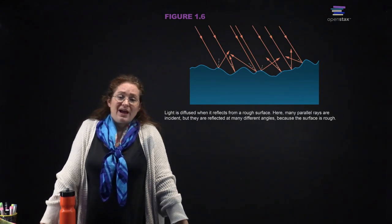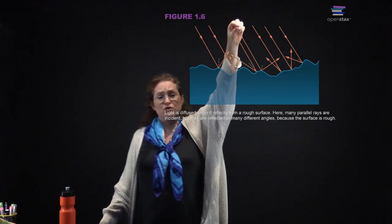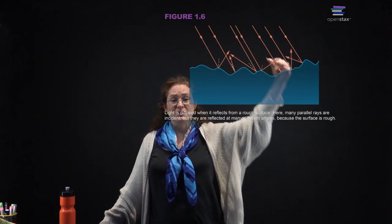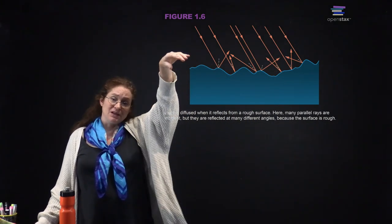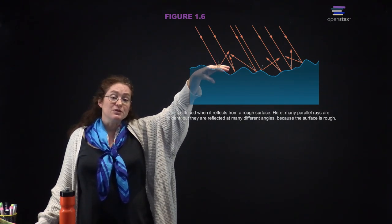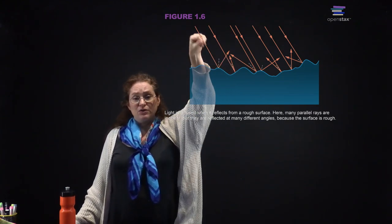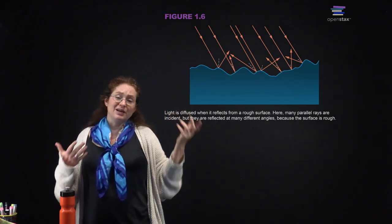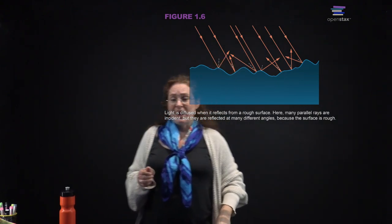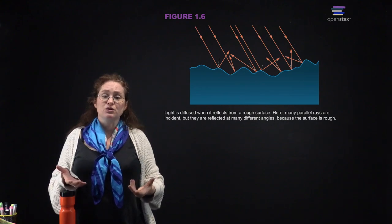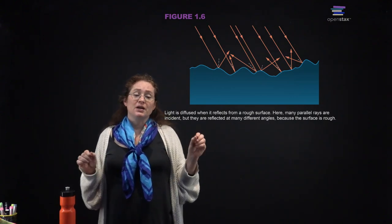When you have a rough surface, you have a bunch of different light rays hitting it. They are always reflected off at the same angle that they were incident upon the surface, but because the surface is rough — meaning microscopically it is not flat, there are a lot of bumps and wiggles — the reflections are going to be at all sorts of different angles. That diffuses the light; it is spread out. You don't get a pretty image because the surface is rough.